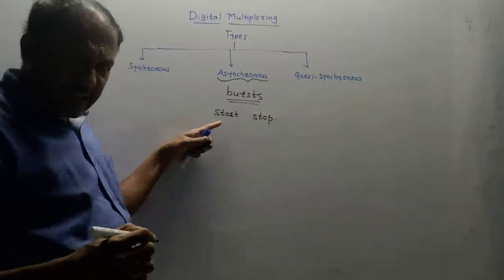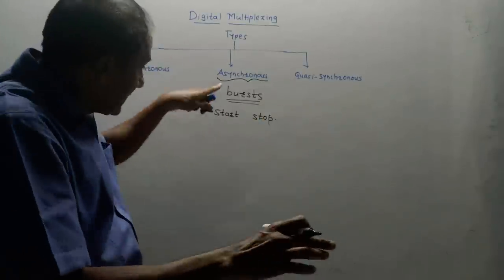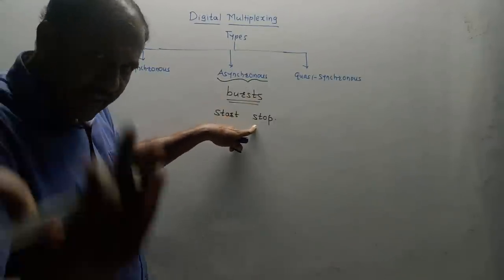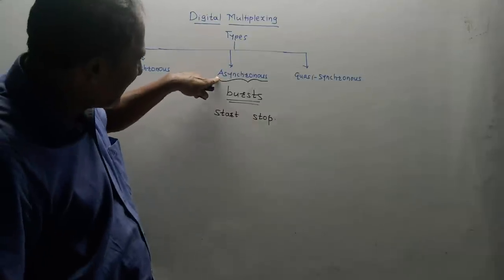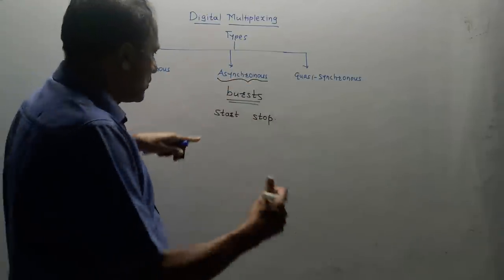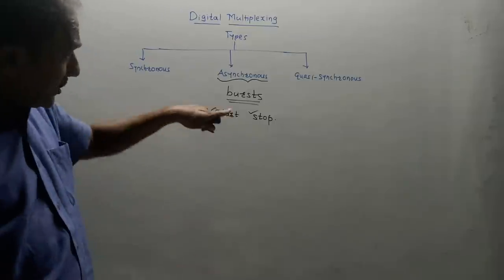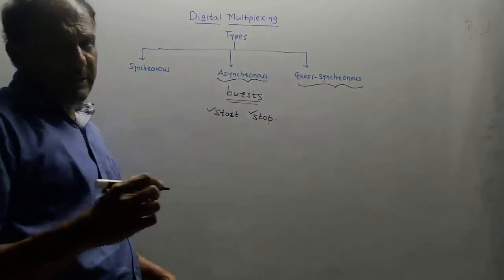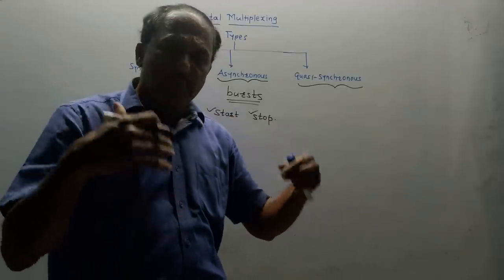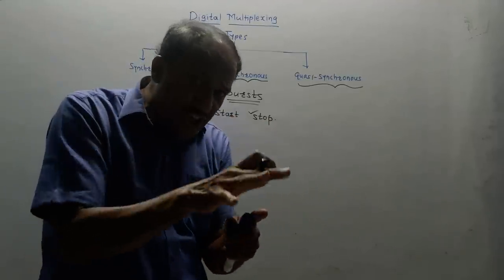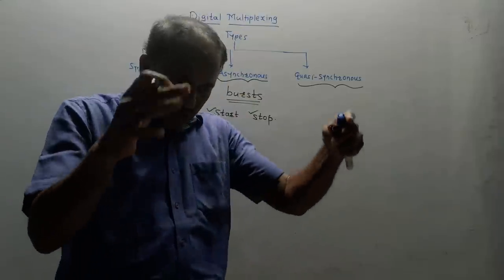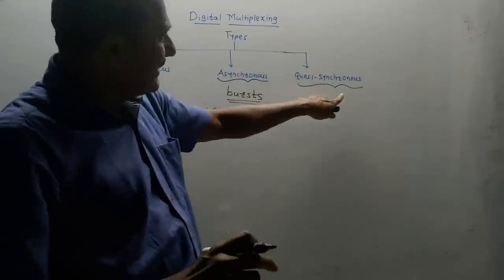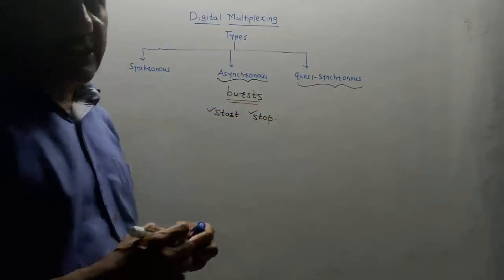This is the asynchronous type of digital multiplexing, in which we use start and stop bits and no master clock. The third type is quasi-synchronous digital multiplexing. If there is variation in the bit rate of each source but that variation is within a bound, then this quasi-synchronous technique is used.